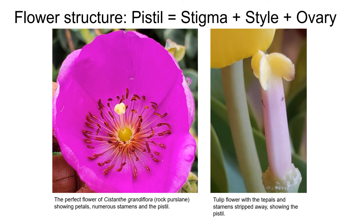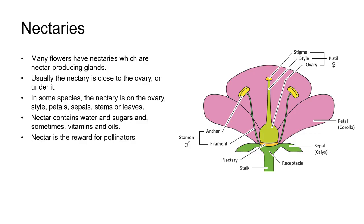Here is Cistanthe grandiflora (or Calandrinia grandiflora), rock purslane, on the left showing the petals, numerous stamens, and the pistil in the middle — with the ovary, style, and stigma visible at the top. On the right is the tulip again with tepals and stamens stripped away, showing just the pistil remaining in the middle.